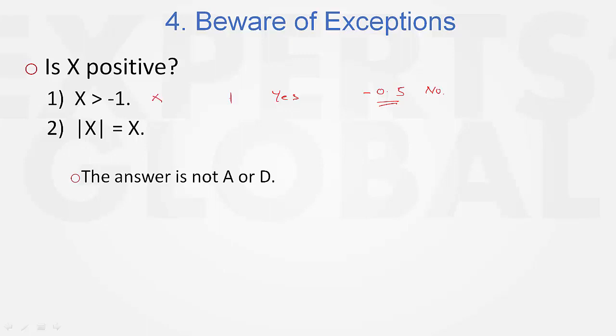Look at statement 2: |x| = x. One would think that this is possible only for positive values of x, such as 1. |1| = 1. For cases such as negative 0.5, this would not hold, and some students may mark statement 2 as sufficient. However,